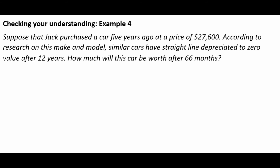Suppose Jack purchased a car five years ago at a price of $27,600. According to research on this make and model, similar cars have straight-line depreciation down to zero after 12 years. How much will this car be worth after 66 months? A shortcut here: we can take the price of the vehicle, $27,600, and divide it by 12, remembering the answer is negative because we're losing value. This gives us the slope: negative $2,300 per year.